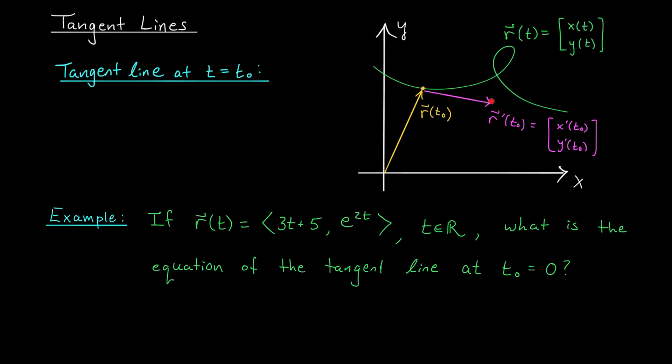We've just learned how to find a vector that points tangent to our curve at some point t equals t₀. Well, once we know this, it becomes really easy to write down the equation for the tangent line at this point. After all, r(t₀) is a point on the line, and r'(t₀) is a direction vector. Notice that for both of these vectors, we've plugged in t equals t₀, so they no longer involve the parameter t. This means we're going to need a new parameter in the equation of our line. Let's say s. Our line is then given by the point on the line, r(t₀), plus s times the direction vector, r'(t₀). Here, s can be any real number. Let's check out a quick example.